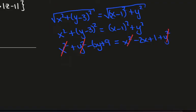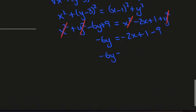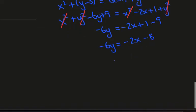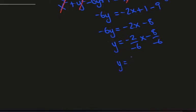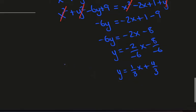And I'll have minus 6y is minus 2x plus 1 minus 9, so minus 6y is minus 2x minus 8. I'll divide by negative 6. I'll get negative 2 over negative 6 x minus 8 over negative 6, and this gives me (1/3)x plus 4/3. So that's the boundary.